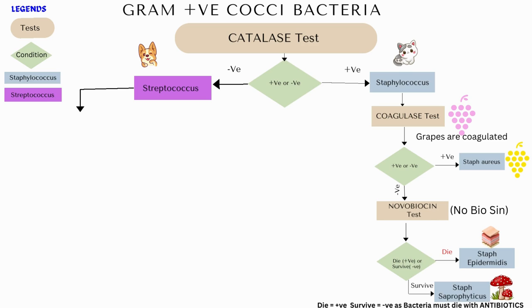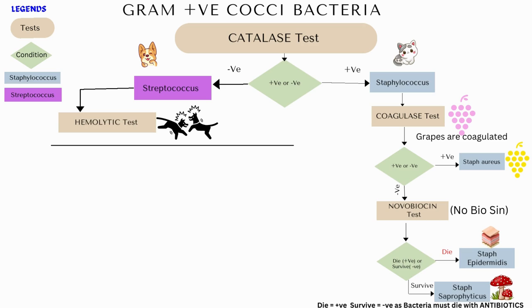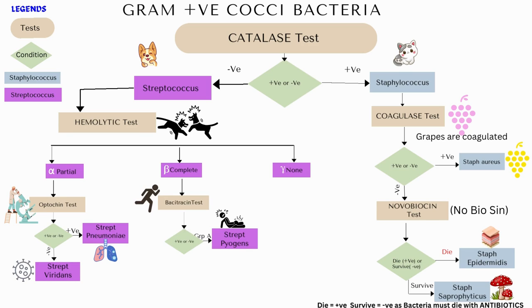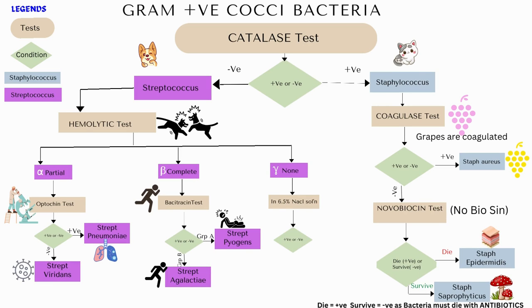Next, we talk about streptococcus. We check streptococcus for hemolysis — three results: alpha, beta, and gamma. Alpha is partial hemolysis, beta is complete hemolysis, and gamma is no hemolysis at all. Alpha bacteria undergo optochin testing: a positive result is indicative of streptococcus pneumoniae, and a negative optochin test is indicative of streptococcus viridans. Beta bacteria undergo the bacitracin test: a positive result indicates streptococcus pyogenes, and a negative bacitracin test indicates streptococcus agalactiae. Gamma bacteria are tested with 6.5% NaCl solution: a positive test is indicative of Enterococci, while a negative test is streptococcus bovis or streptococcus gallolyticus.